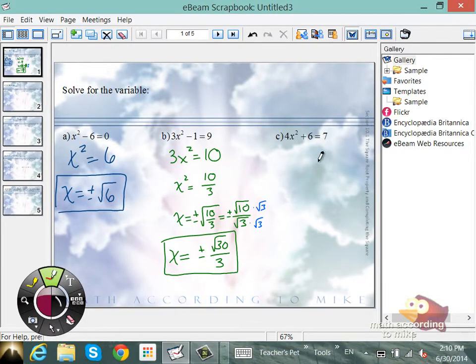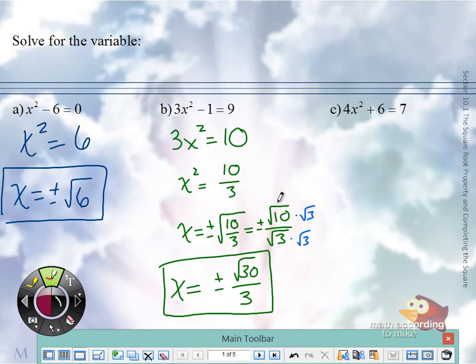All right, we're going to isolate the squared term. We're going to divide, I'm sorry. We're going to subtract 6. Divide by 4. I'm going to take a square root of both sides. Going for your plus or minus.